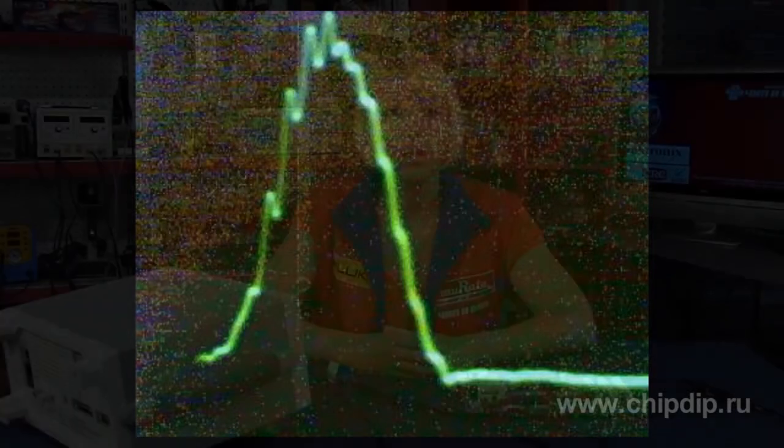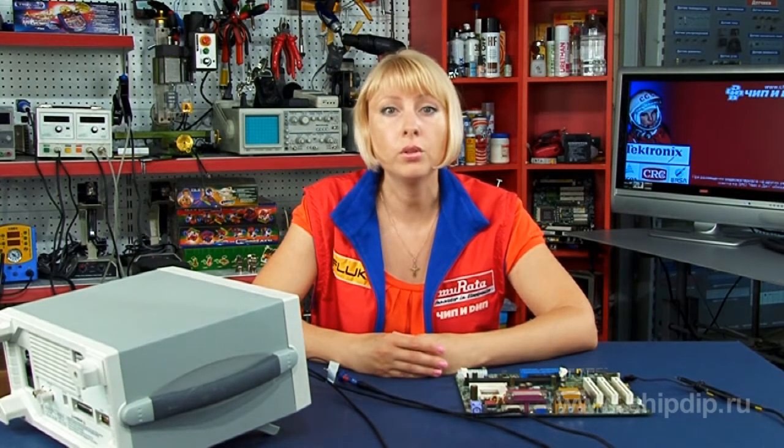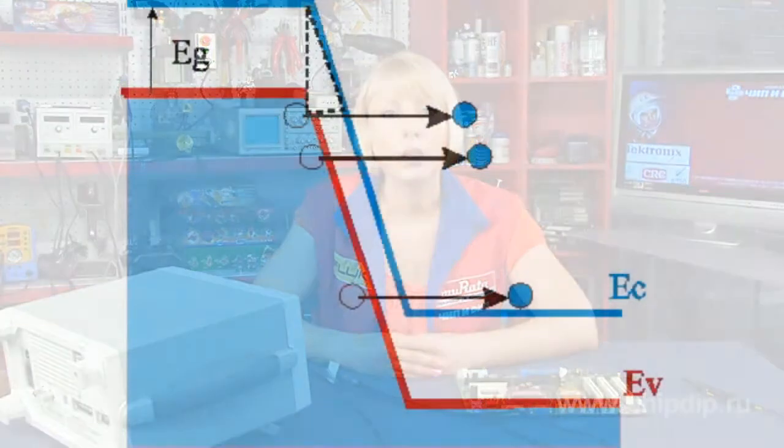In real life, P-N junction when back voltage reaches some critical value current through junction sharply increases, causing junction breakdown. Voltage value necessary for breakdown depends on P-N junction type and ranges from a few volts to a few kilovolts.